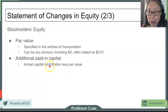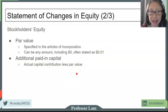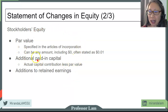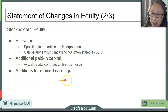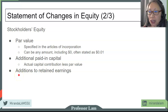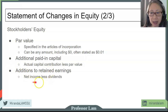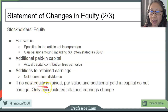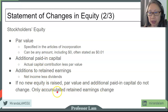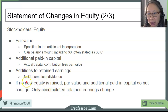Additional paid-in capital is typically the actual dollar contribution by equity holders, angel investors, or venture capital firms — the actual contribution amount minus the par value. If you sell stock at $5 per share with a one-cent par value, your additional paid-in capital is $4.99 per share. The stockholder's equity account includes par value, additional paid-in capital, and each year earnings not paid out as dividends are added to retained earnings — additions to retained earnings equals net income minus dividends.